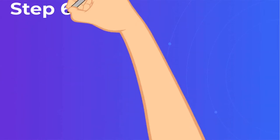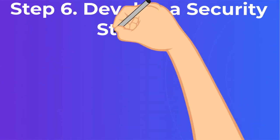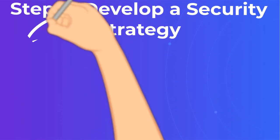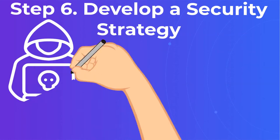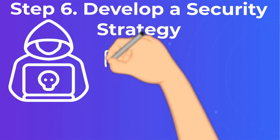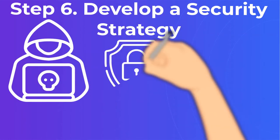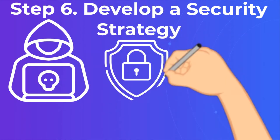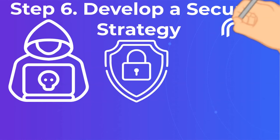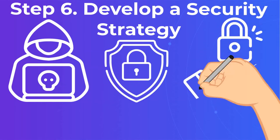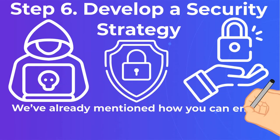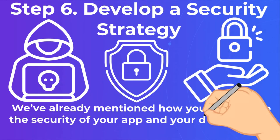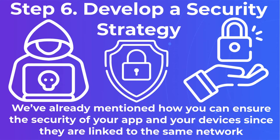Step 6: Develop a Security Strategy. Because smart homes are particularly vulnerable to hacker attacks, security is the most difficult challenge for IoT systems in general. We've already mentioned how you can ensure the security of your app and your devices, since they are linked to the same network.